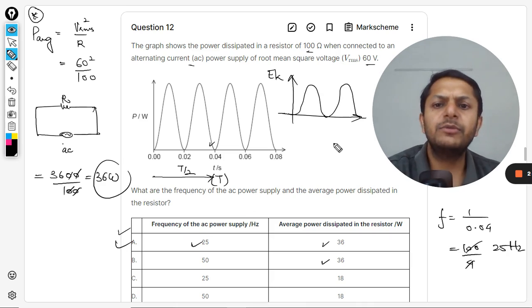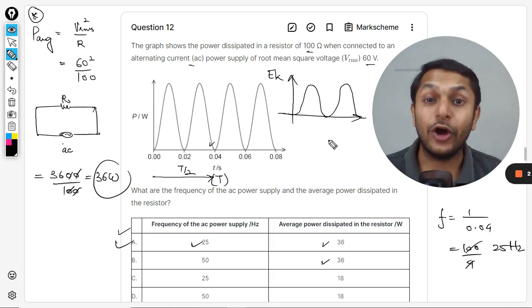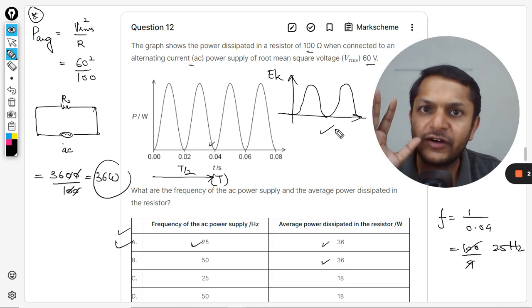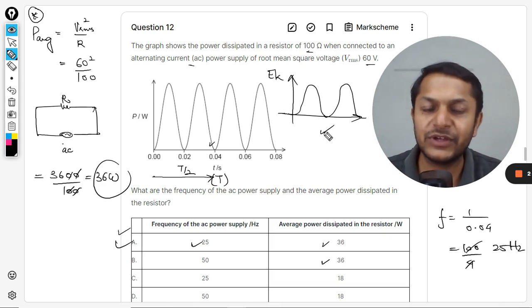Like this, because that is going to be the square of the sine theta or square of the cos theta kind of thing. So it is having this kind of a variation. I believe you understand what I'm saying.